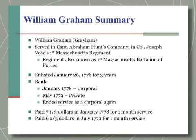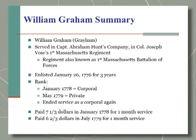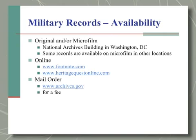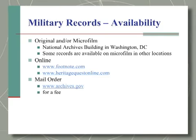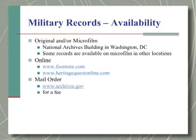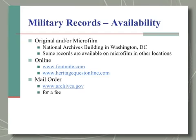For example, when he was serving as a corporal in January 1778, he was being paid seven and a third dollars per month. As for where to find these records, all the textual records are available at the National Archives Building. Records available on microfilm are also available online through Footnote, Ancestry, or Heritage Quest Online. If you can't visit the National Archives in person, you can request records through the mail using a form available to download from our website, www.archives.gov.